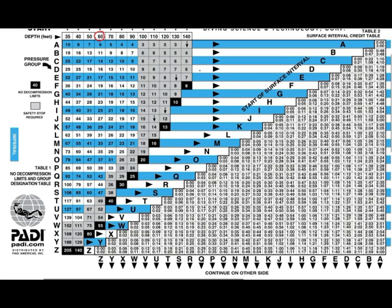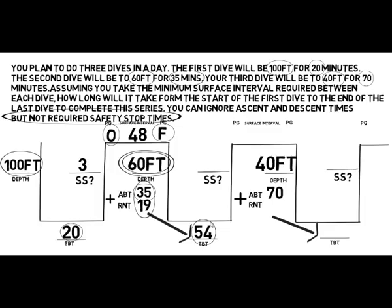In the 60-foot column with 54 minutes of total bottom time, that puts us in pressure group V. It is indeed a dive that requires a safety stop, so on our diagram we note that a safety stop is required and it leaves us in pressure group V.